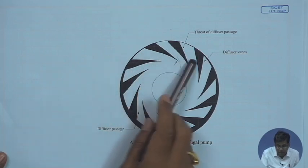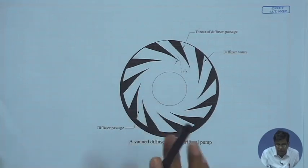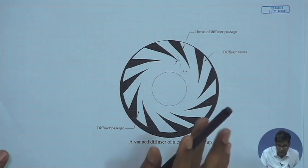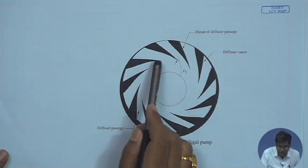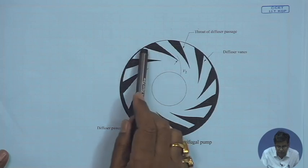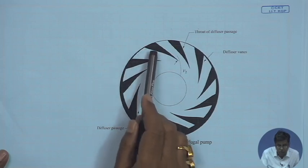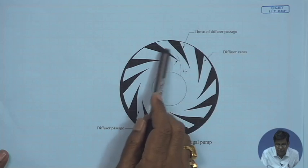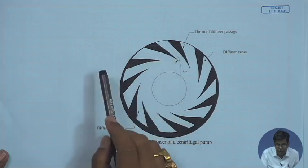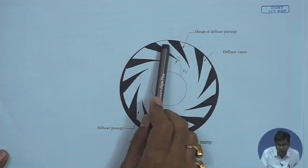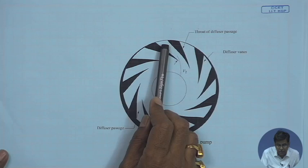While designing the diffuser vane, a few things are taken into consideration. Number one is that the angle of divergence of the diffuser vanes — that is the diffuser passage — should not be more than 8 degrees, maximum 10 degrees, between 8 to 10 degrees, to avoid boundary layer separation.